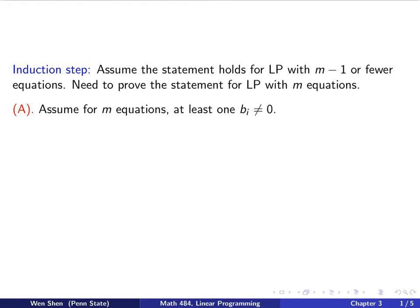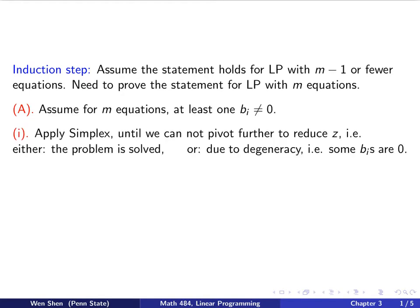So there are two big cases here. We call case capital A and case, later case capital B. Let's look at case capital A. Case capital A, we assume that for the m equations that we have there, at least one of the bi is not zero. That is the case we'll be looking at first. So there are several steps we need to talk about. Step one, if that is the case,